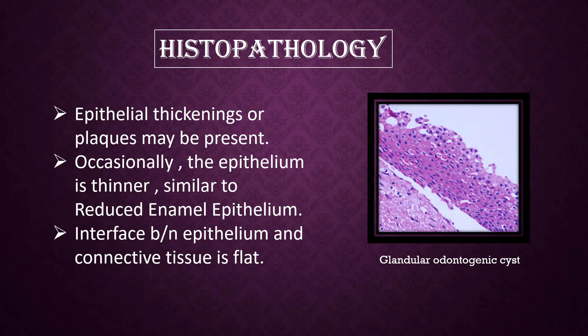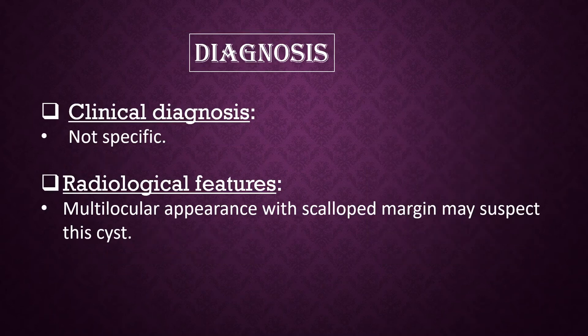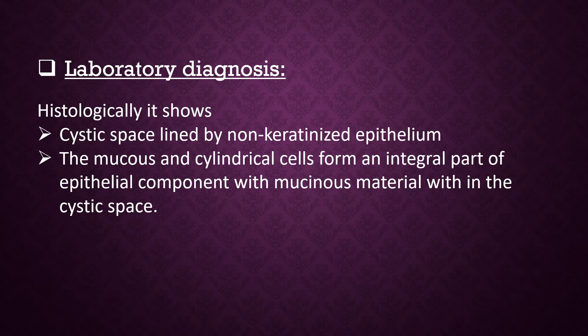The interface between the epithelium and connective tissue is flat. Diagnosis: Clinical diagnosis is not specific. Radiologically, a multilocular appearance with scalloped margins may suggest this cyst. Histologically, it shows a cystic space lined by non-keratinized epithelium. The mucous and cylindrical cells form an integral part of the epithelial component, with mucous material within the cystic space.